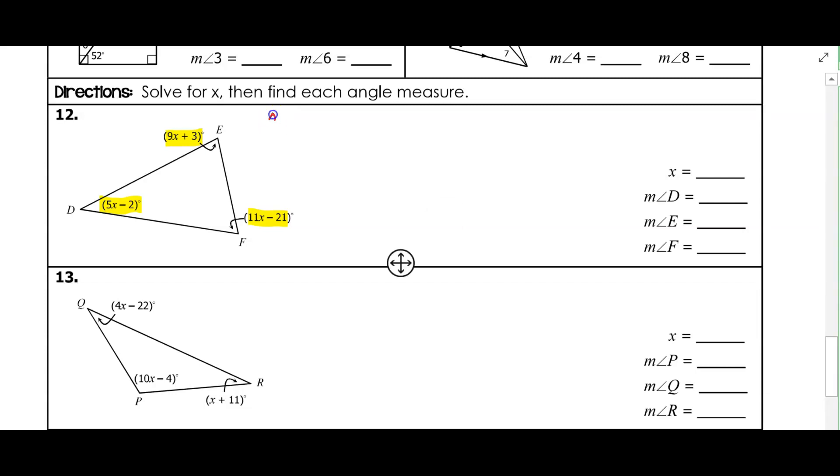So I've got 9x plus 3 plus 11x minus 21 plus 5x minus 2 is going to equal 180. All right, so now that we're here, we're going to combine like terms.